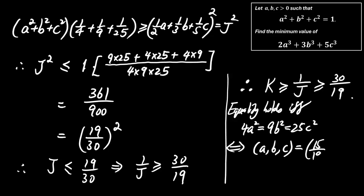We get a equals 15 over 19, b equals 10 over 19, c equals 6 over 19.